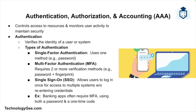Now let's look at the Triple-A framework, which stands for authentication, authorization, and accounting. These concepts help control access to resources and monitor activity. Authentication is the process of verifying the identity of a user or system. Single-factor authentication involves just one method like a password. Multi-factor authentication adds security by requiring two or more verification methods, such as a password and a fingerprint. Single sign-on allows users to log in once and gain access to multiple related systems without re-entering credentials. For example, multi-factor authentication is common in banking apps requiring a password and a one-time code sent to your phone.